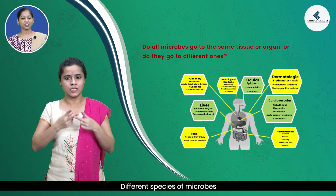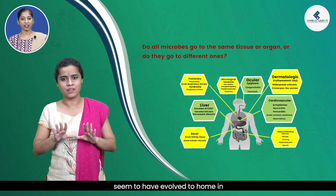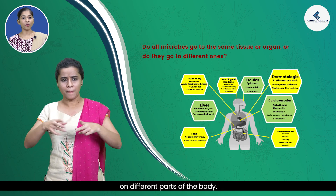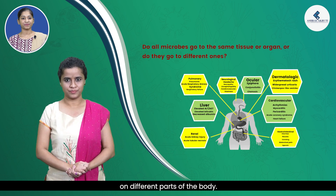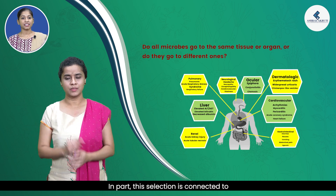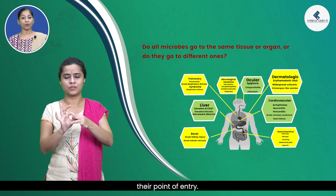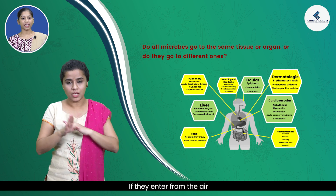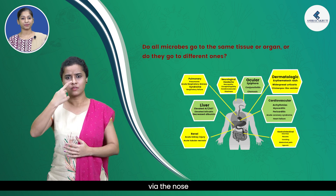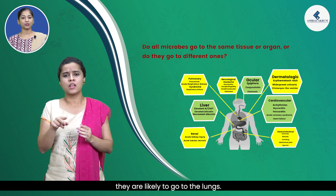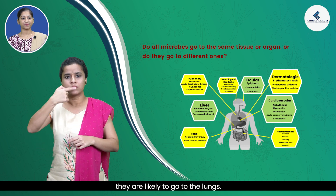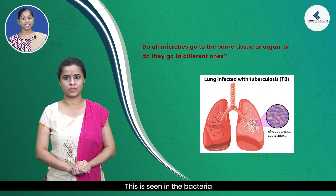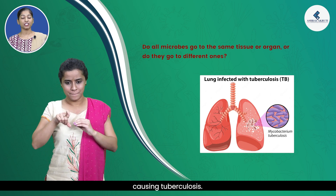Different species of microbes seem to have evolved to home in on different parts of the body. In part, this selection is connected to their point of entry. If they enter from the air via the nose, they are likely to go to the lungs. This is seen in the bacteria causing tuberculosis.